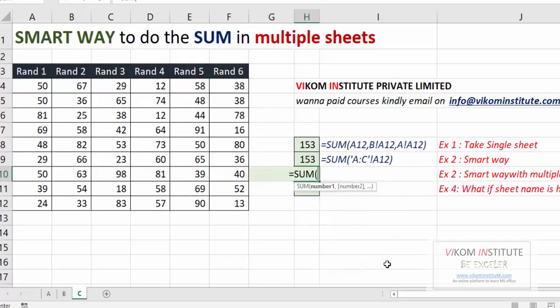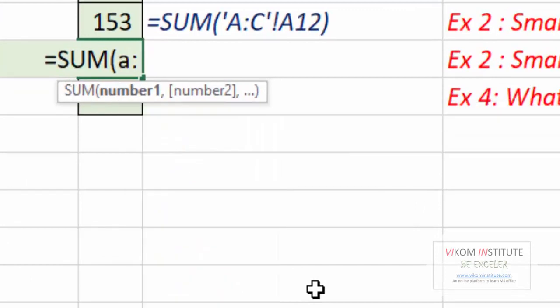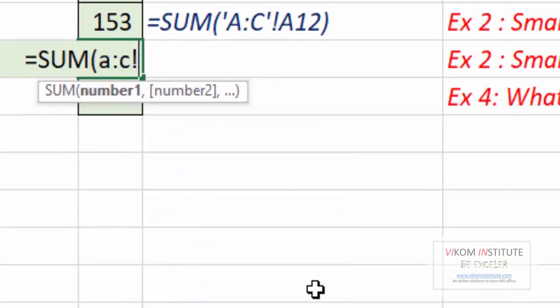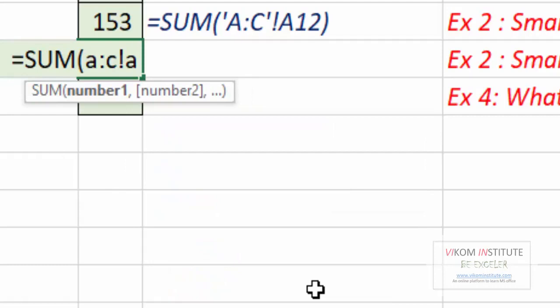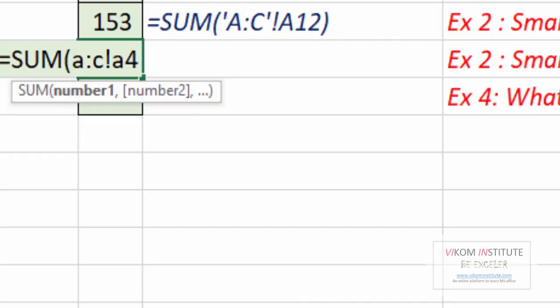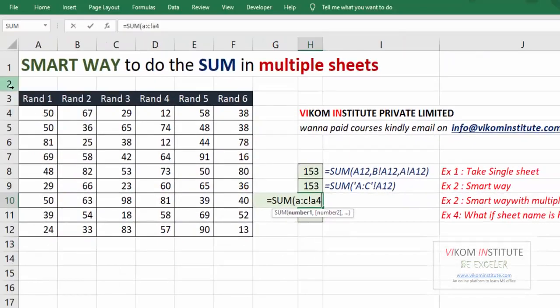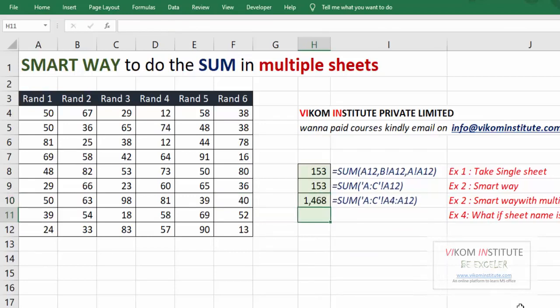A column C exclamation mark A4 - it will give us sum of A4 in all these sheets. But what if I want to add from A4 to A12? So I will write A4 to A12, so this will be the sum. Let's close the parentheses and press enter. So this will be the sum of all the sheets.